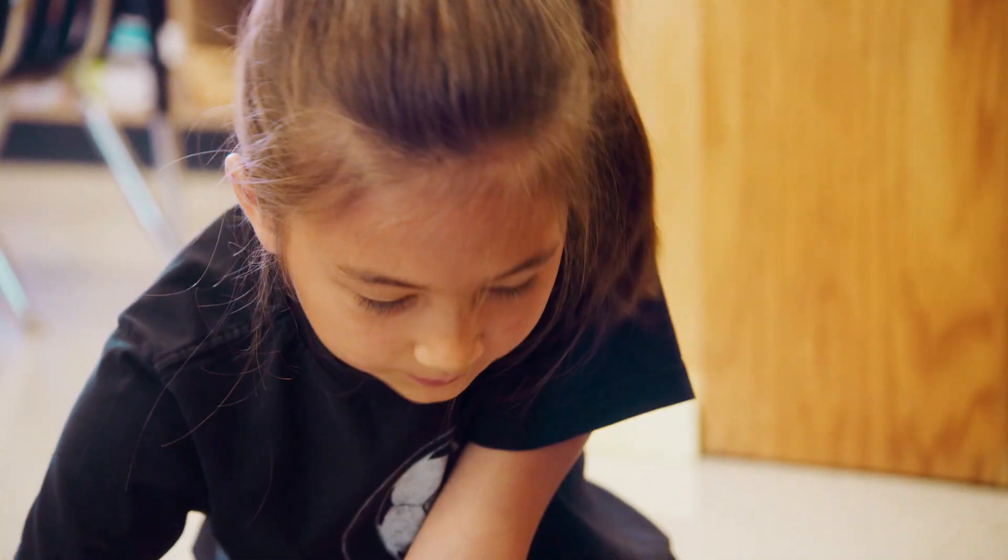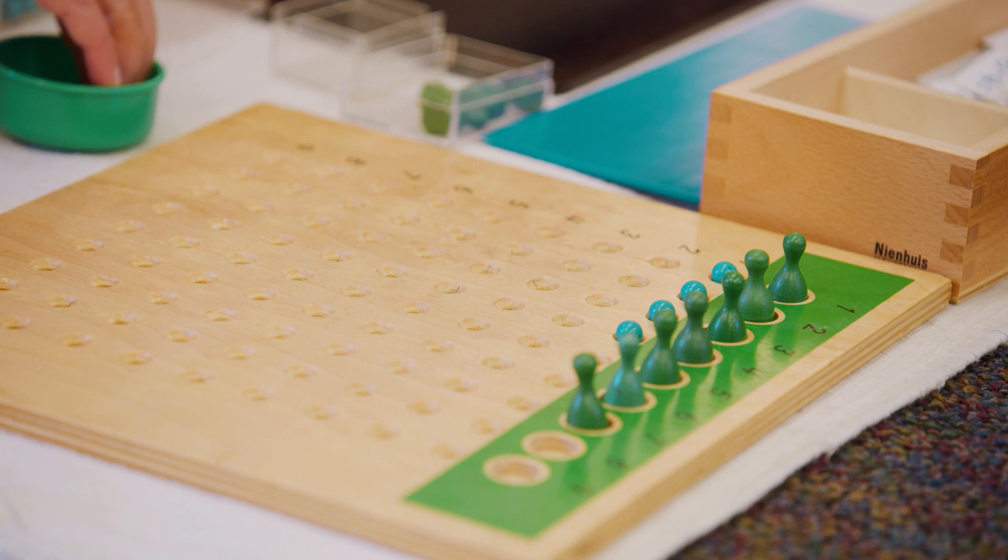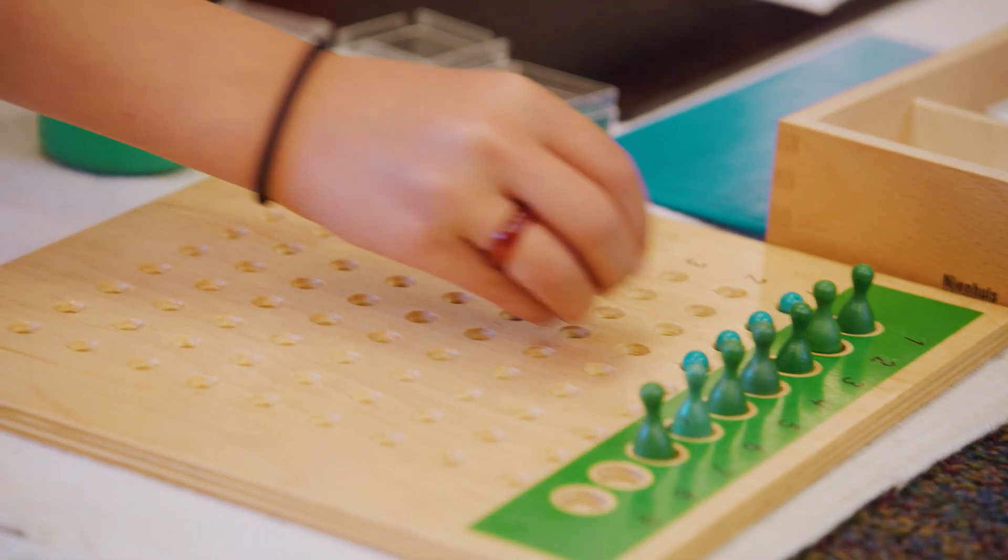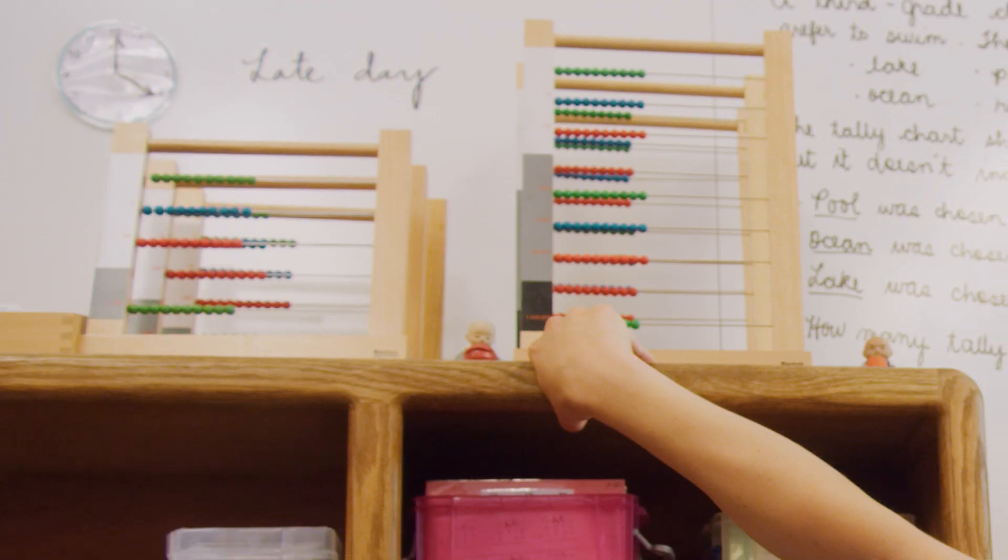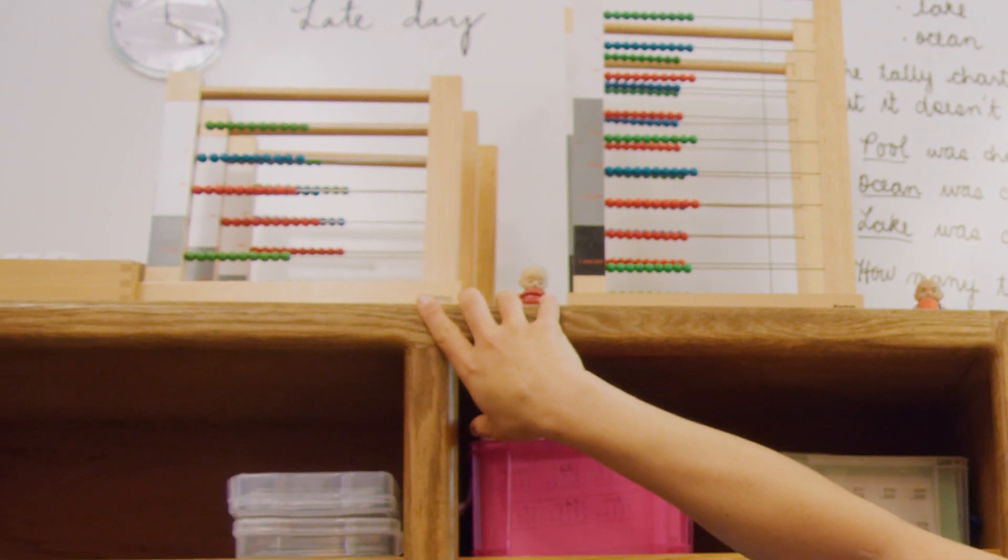Marlow was using the division bead board and the division test tubes. You can do all the operations on many different materials—the bead frame, the large bead frame, the small bead frame. We teach them how to do it on different ones.